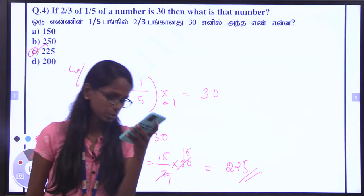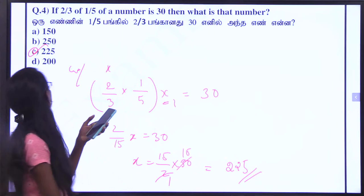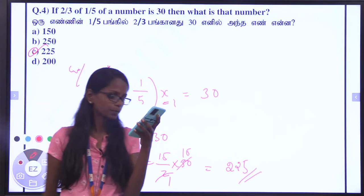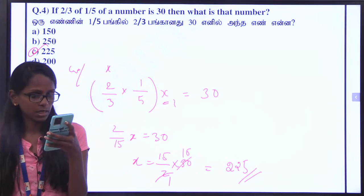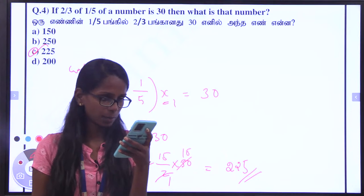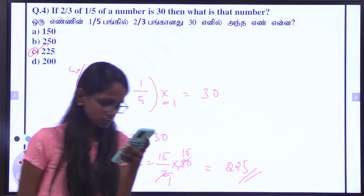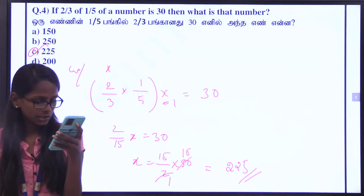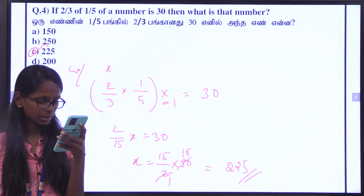Super. The answer is 225. Rajen: option C — super Rajen. Sharpen: 225 — super. Vijaya and Thiyagu: 225 — super.